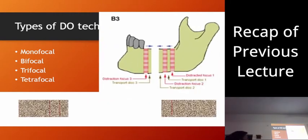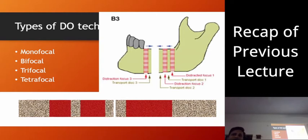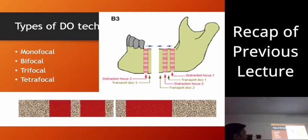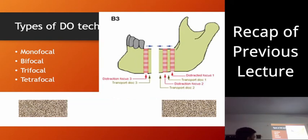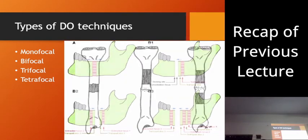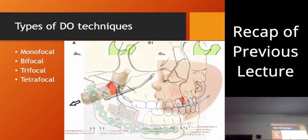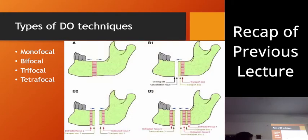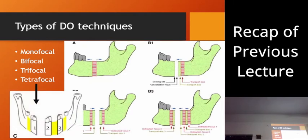Then we have tetrafocal — at one end we are creating two discs and at the other end only one disc, giving us four sides where new bone formation is occurring. These are all examples: monofocal, transport distraction bifocal, and tetrafocal.